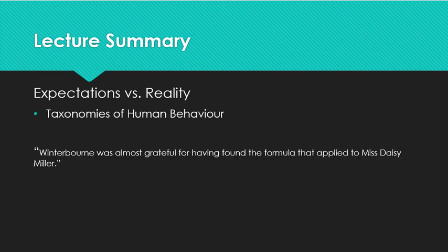One of the central expectations that the main character of the novella brings to the events of the text is that people are easy to fit into neat categories. Winterborn believes he should be able to find the formula that explains Daisy and allow him to perfectly understand her actions and her motives. The reality, of course, is that people are not so easy to categorize. Every time Winterborn believes he's found the formula to explain Daisy, she does something to make him question her yet again. Is she a harmless American flirt and a nice girl, or a rather wild girl — a young lady whom a gentleman need no longer be at pains to respect?